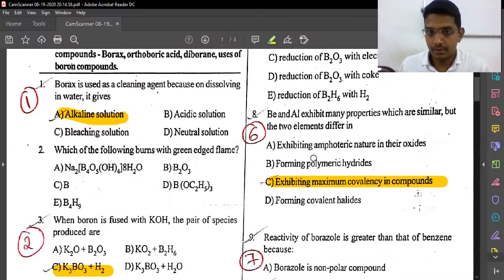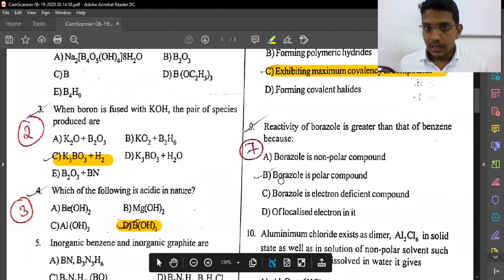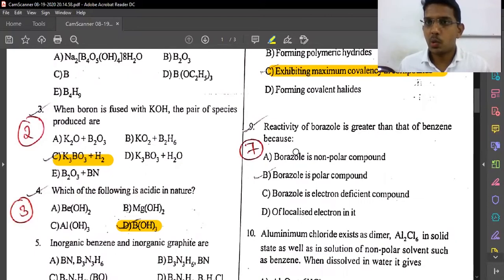The reactivity of borazole is greater than that of benzene. Borazole, also called borazine, is the inorganic benzene. The reactivity of borazole is greater than benzene because it is a polar compound, not an ionic or covalent component.